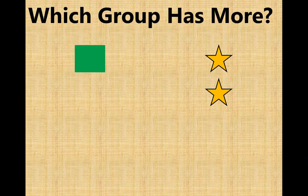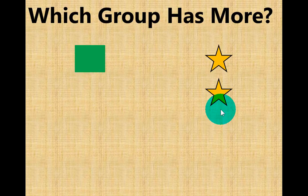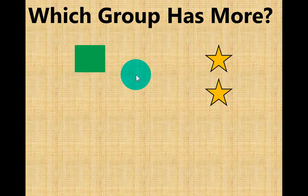Today we're going to be counting objects. Which group has more? The green squares or the gold stars? Let's count.